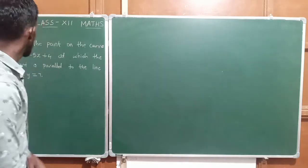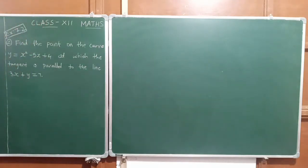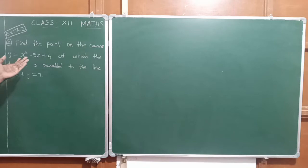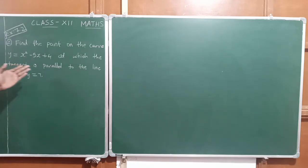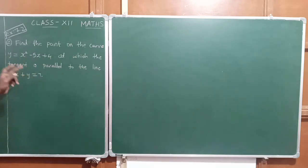Students, let us see question number 2: find the point on the curve y is equal to x square minus 5x plus 4, at which the tangent is parallel to the line 3x plus y is equal to 7.